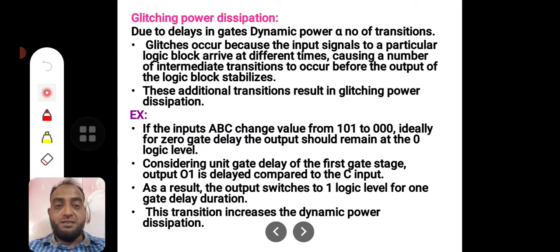When inputs are coming through different propagation delay times, the arrival of inputs at a particular gate differ from time to time. As new inputs are arriving, its output is changing unnecessarily. The output is changing when it should not happen.